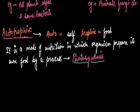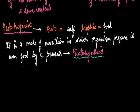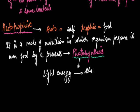Photosynthesis is a process by which organisms are able to prepare their own food. In this process, inorganic molecules like CO2 and H2O are converted into organic molecules like carbohydrates. In short, in photosynthesis, light energy is converted into chemical energy.